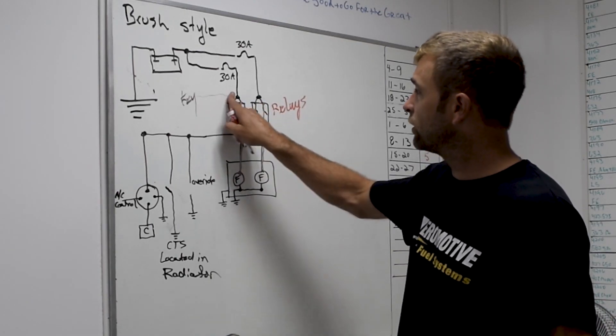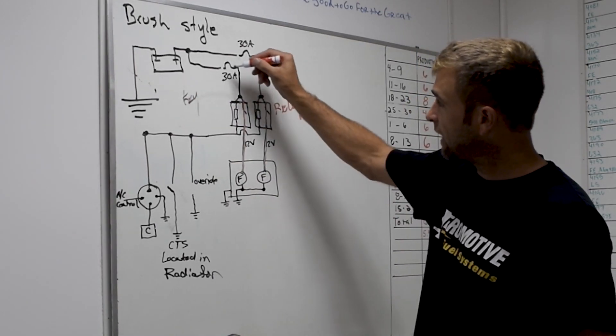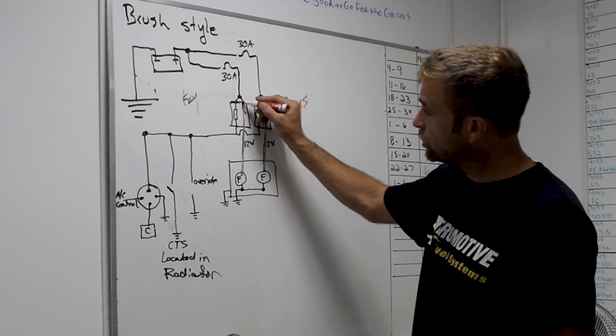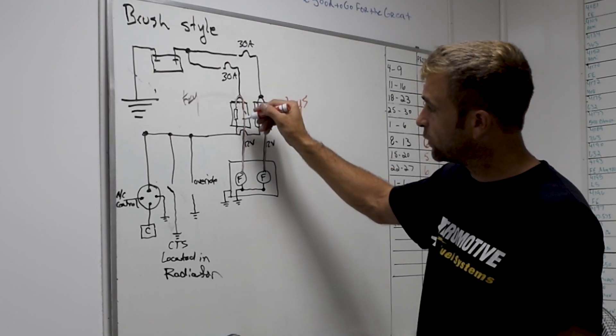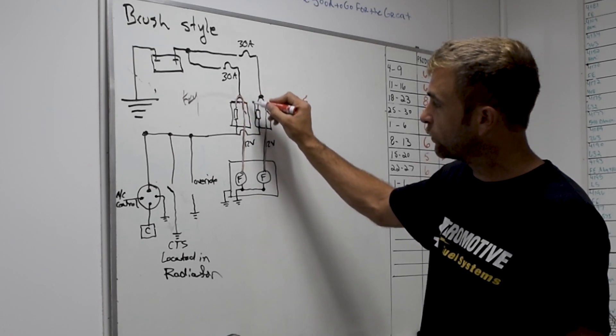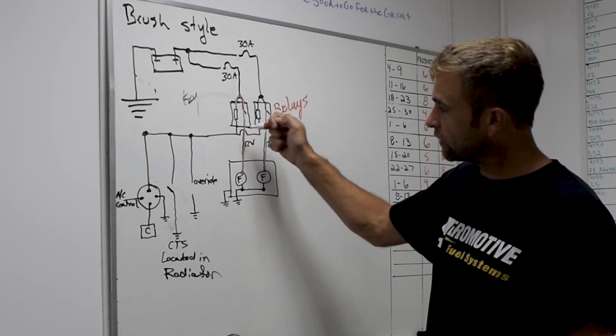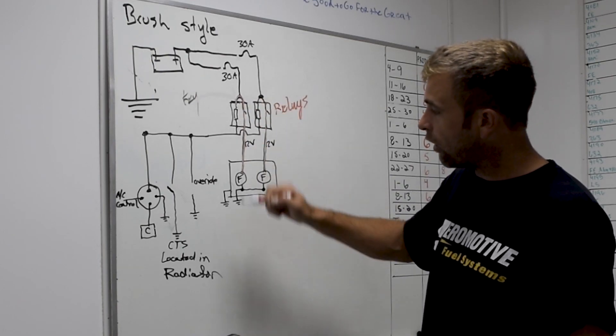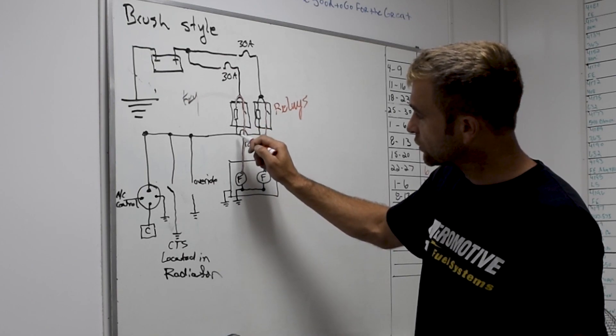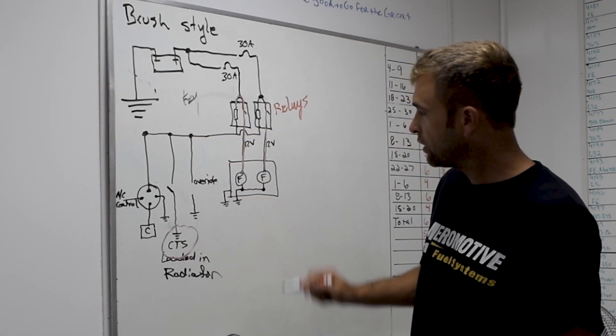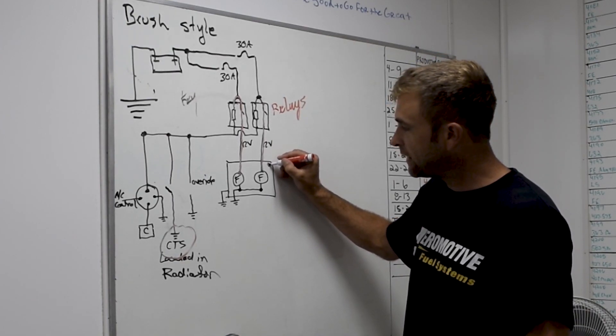So obviously what you can see, we're taking our power coming into the relay that's going to power the fan and we jumper it and we bring it over to the switch side. So I call it that this relay is live all the time. The only thing that's going to turn or switch that relay on is basically this ground side is going to our coolant temperature switch, which is located in the radiator.